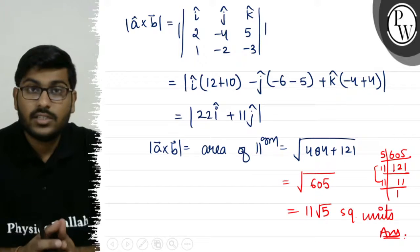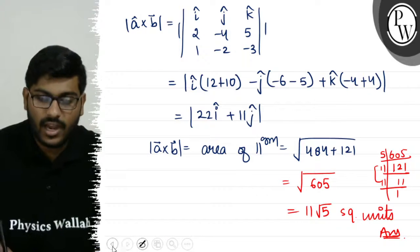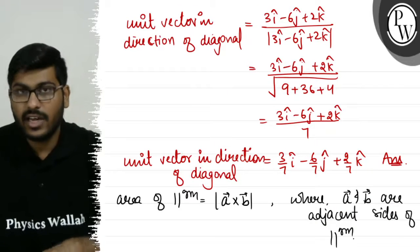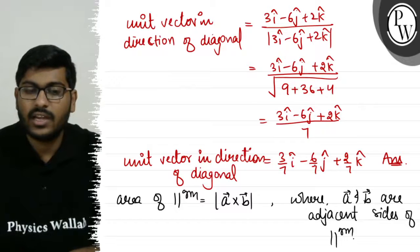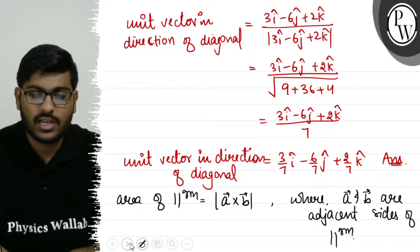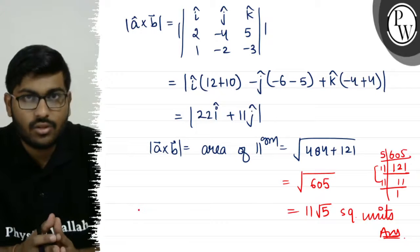So the final answer is the area of parallelogram is 11 root 5, and the unit vector in direction of diagonal is 3/7 i-cap minus 6/7 j-cap plus 2/7 k-cap. This is the explanation to this question.